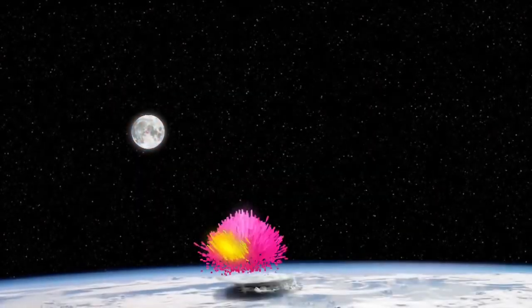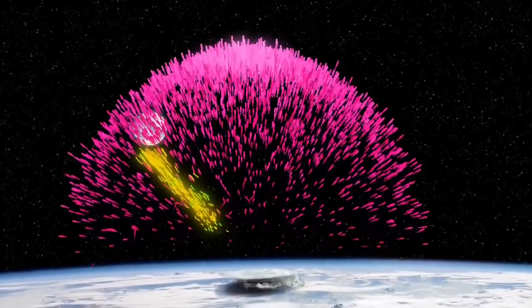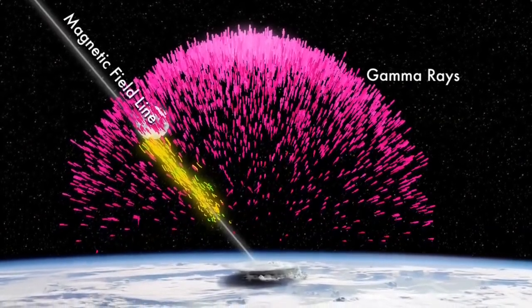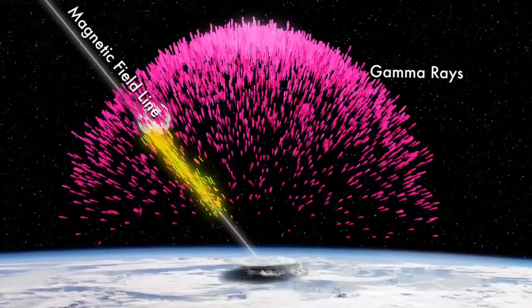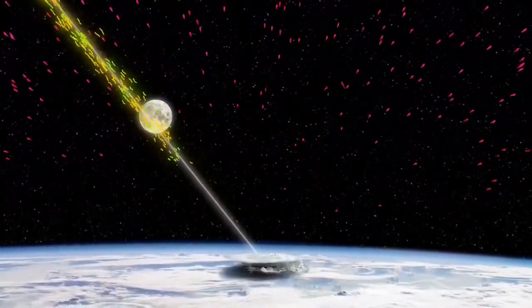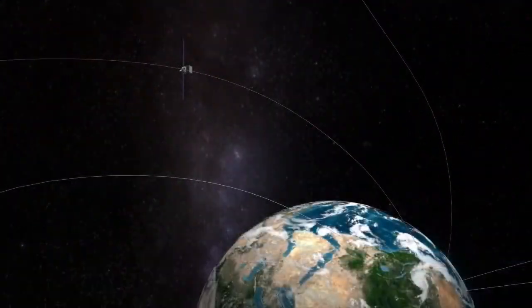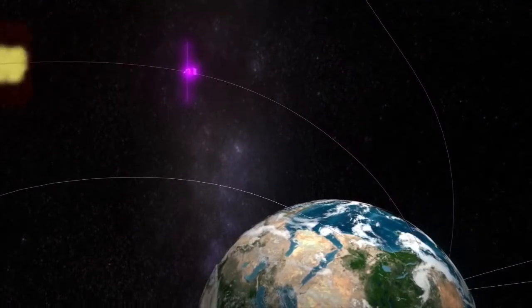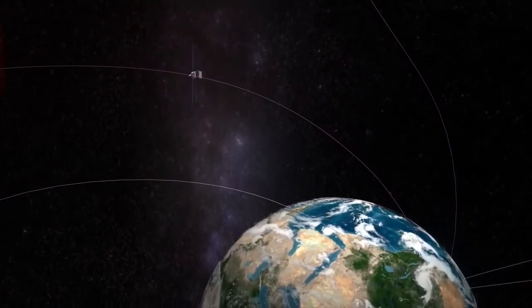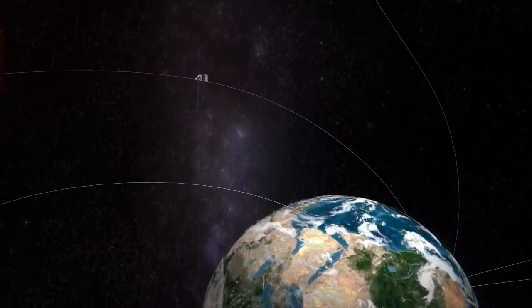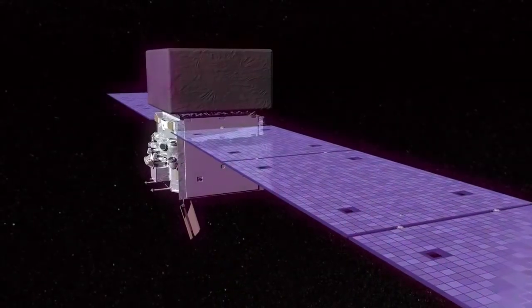The gamma rays travel in straight lines, but the charged particles spiral along lines of Earth's magnetic field. And that was the route to Fermi. The particles created by the TGF rode upward on magnetic field lines and then struck the spacecraft. The positrons annihilated when they struck electrons in Fermi, creating a flash of gamma rays.